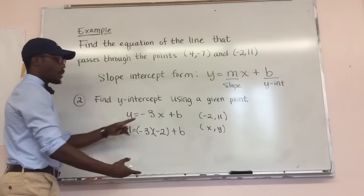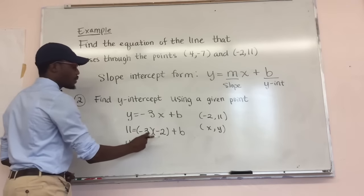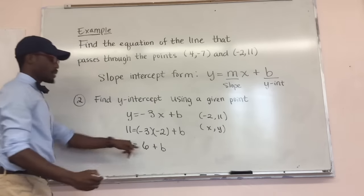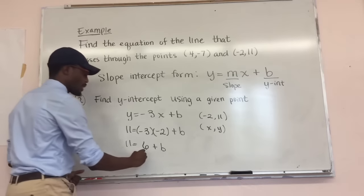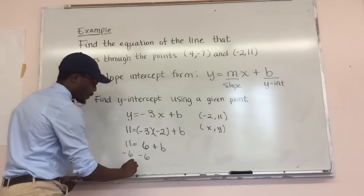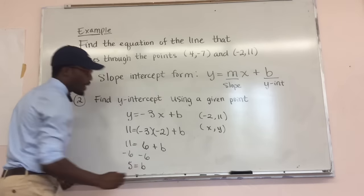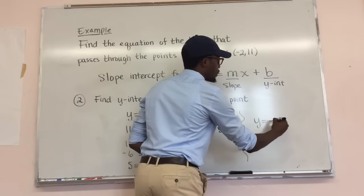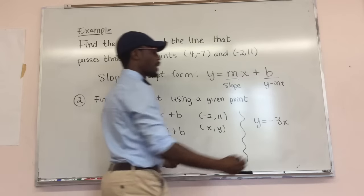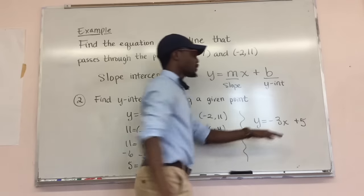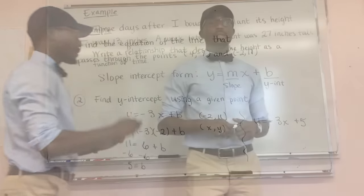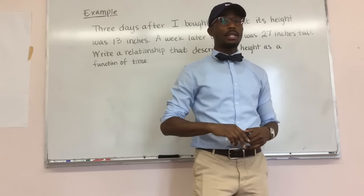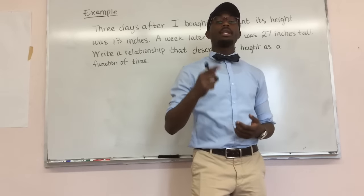We just solve for B: 11 = 6 + B. Subtracting six from both sides gives us B = 5. So our final answer is Y = -3X + 5, where our slope is -3 and our Y-intercept is positive five. The first example was straightforward and showed you the process. This next example is not as straightforward, but it follows the same process.